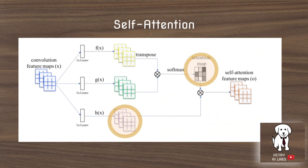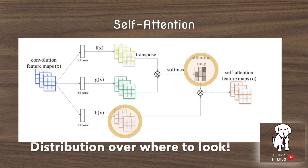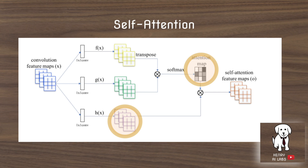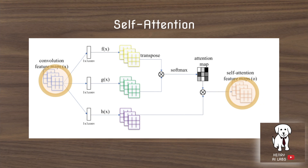The attention map is like a matrix with probabilities summing to 1 — a probability distribution over the different locations of the feature map that this model should be paying attention to at this layer. This attention map then masks the features from the H function, and this forms the self-attention feature maps, O.